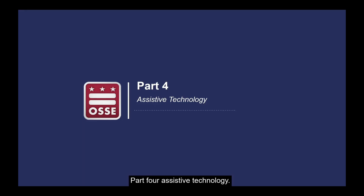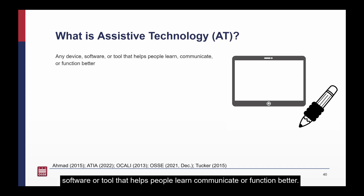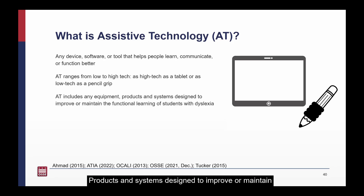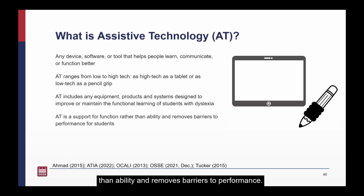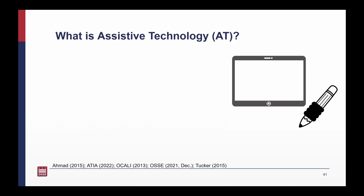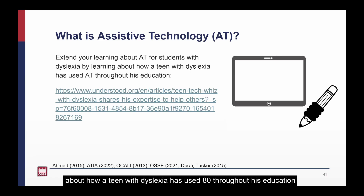Part 4: Assistive Technology. What is assistive technology, also called AT? AT is any device, software, or tool that helps people learn, communicate, or function better. It can be as high-tech as a tablet or as low-tech as a pencil grip. AT includes any equipment, products, and systems designed to improve or maintain the functional learning of students with dyslexia. AT is a support for function rather than ability, and removes barriers to performance for students with dyslexia. AT is an effective way to maximize students' access, participation, and progress in reading instruction and intervention. Extend your learning about AT for students with dyslexia by reading the article linked to this slide about how a teen with dyslexia has used AT throughout his education.